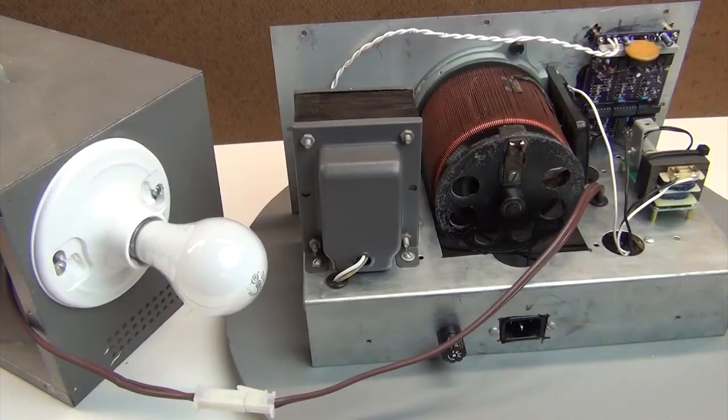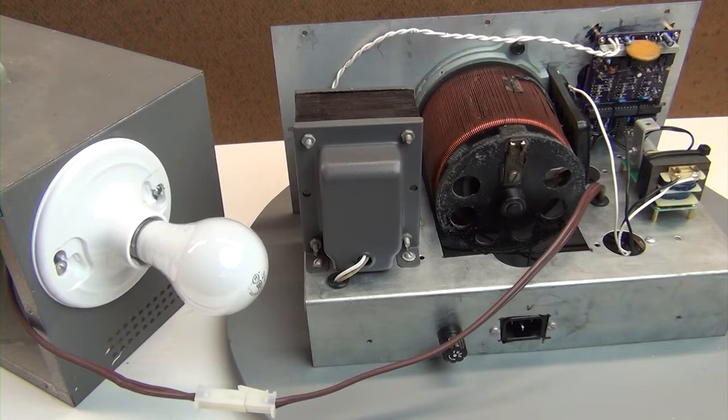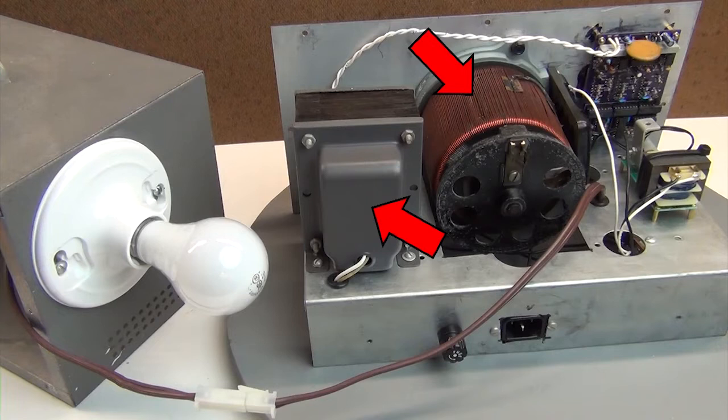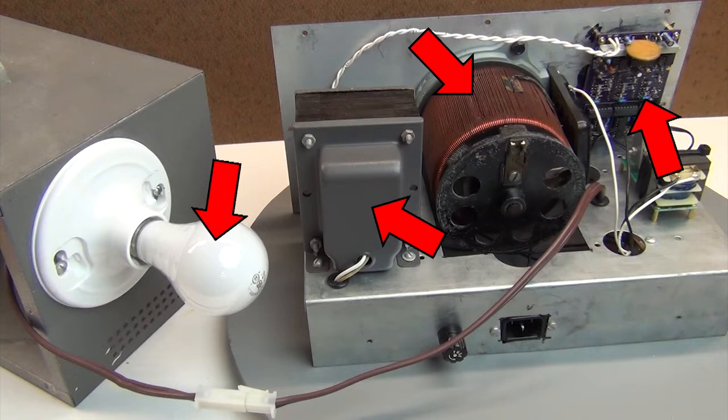My dim bulb tester is a combination of four main elements: A variable auto transformer or more commonly called a variac, an isolation transformer, an incandescent light bulb, and an AC voltmeter. Along with a case and some 3D printed parts that I designed its overall construction is pretty simple.